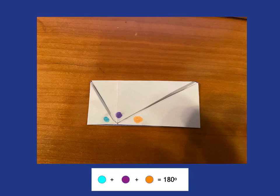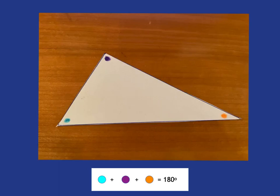This means that the angles of our triangle add up to 180 degrees. So this is a way we can demonstrate that the angles of a triangle add up to 180 simply by using paper folding.